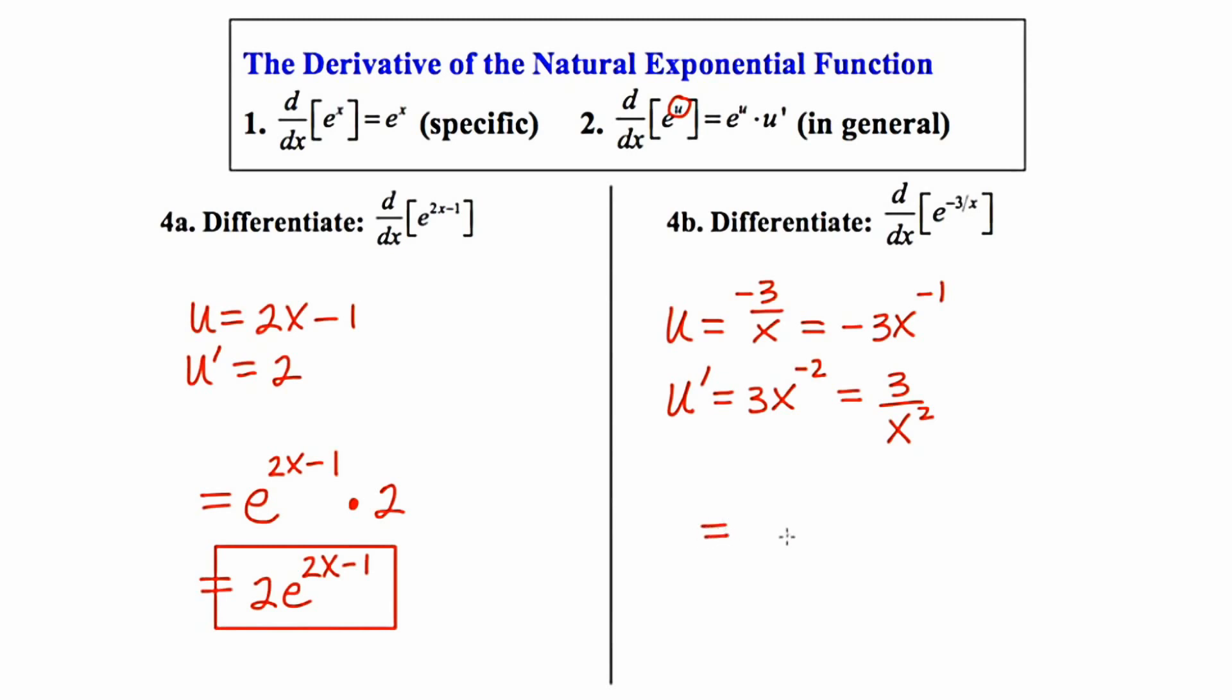So in the end, our derivative is going to be a rewrite of what I started with. So e to the negative 3 over x times the derivative of that exponent, which is 3 over x squared. And I'll do one last rewrite expressing this as a single simplified fraction.